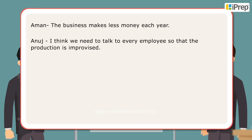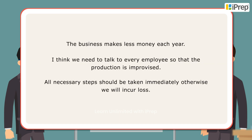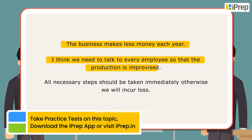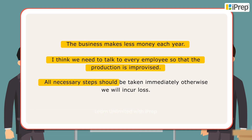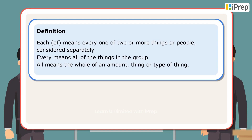In the conversation, Aman and Anuj have used the determiners each, every, and all with countable nouns. Here are the example sentences: 'The business makes less money each year.' 'I think we need to talk to every employee so that the production is improved.' 'All necessary steps should be taken immediately, otherwise we will incur loss.'